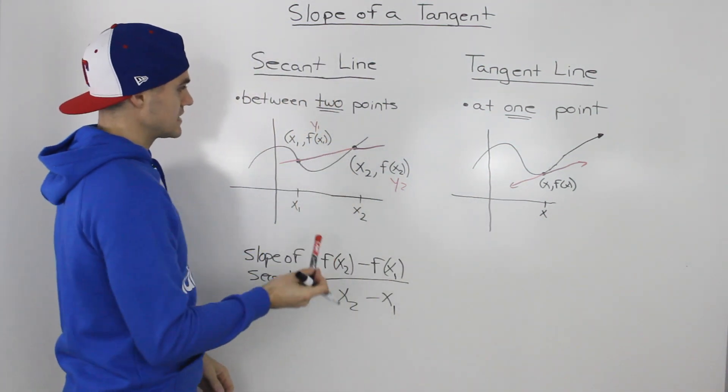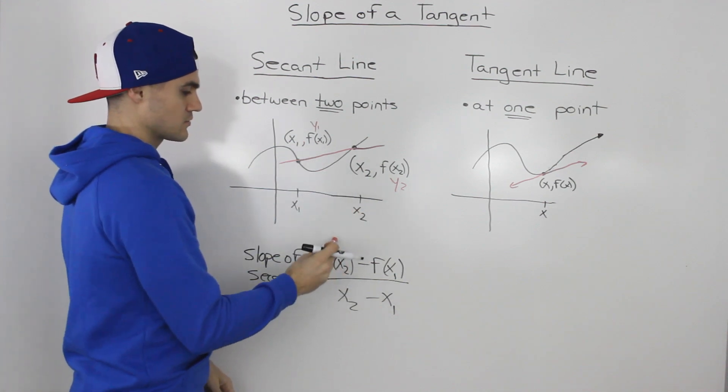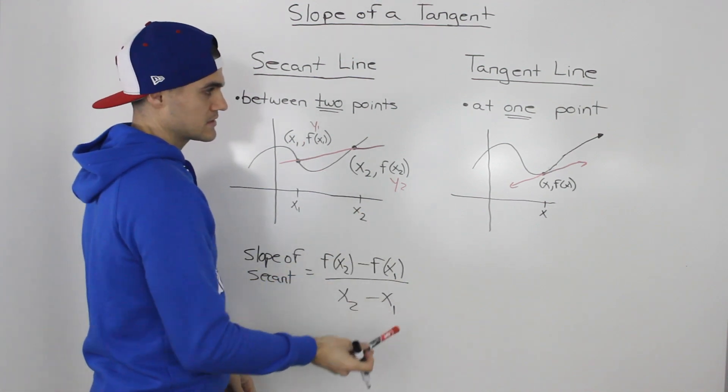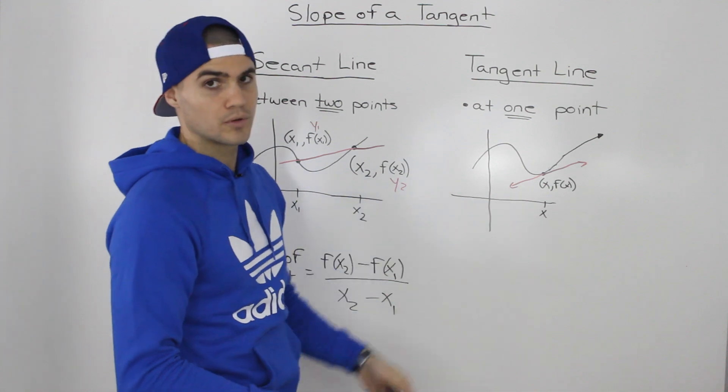In the case of a secant line it was easy because we had two points, so we could just do y2 minus y1 over x2 minus x1. But how do we do it when we only have one point?